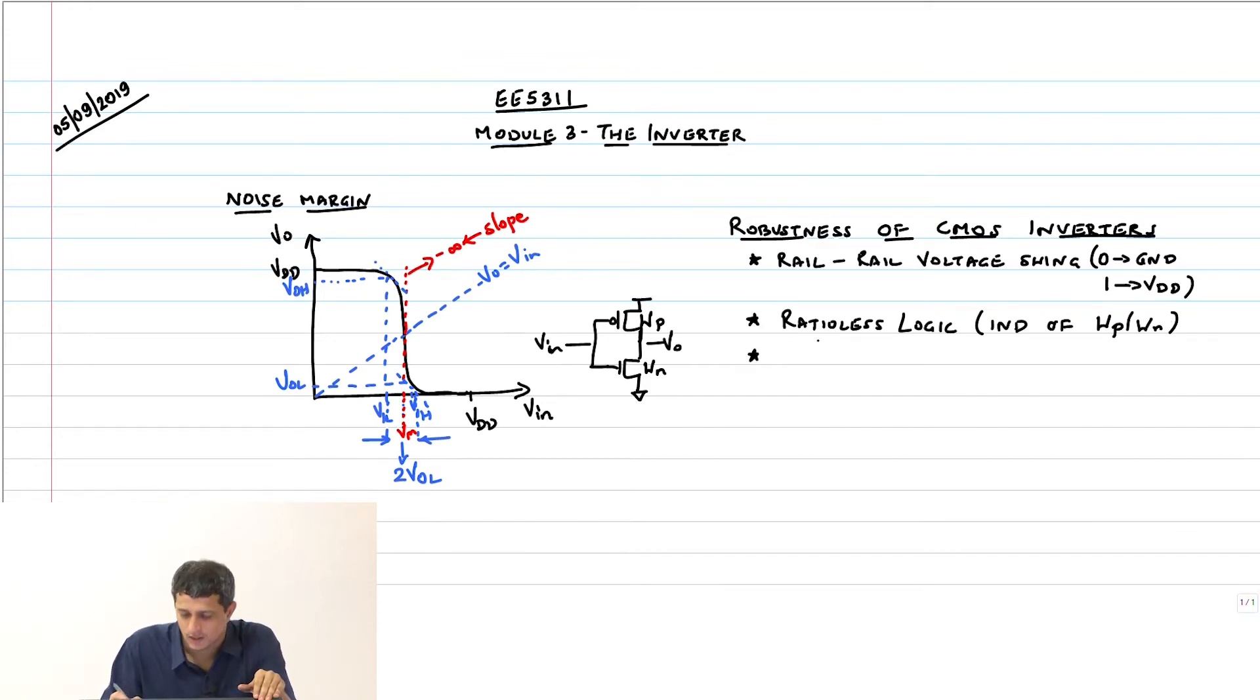Third thing: output impedance is very low. The output is driven very strongly to either ground or VDD because when the nMOS turns on it is turned on very strongly and it pulls the output to logic low. When the pMOS is turned on and the nMOS is off, it is pulled to logic high through a very low resistance path.